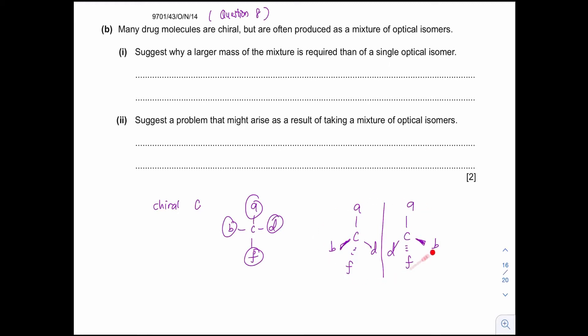Okay, so these are the pair of optical isomers. Alright, now, question 1. Suggest why a large mass of the mixture is required than a single optical isomer.